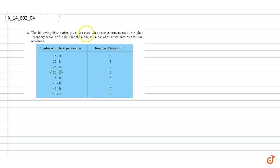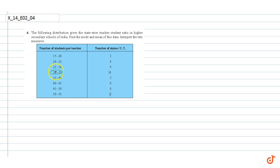In this question, we are given a table that gives the statewide teacher-student ratio in higher secondary schools of India. We have to find the mean and mode of the data and interpret the two measures. The class that has the highest frequency is 30–35, so the modal class is 30–35.